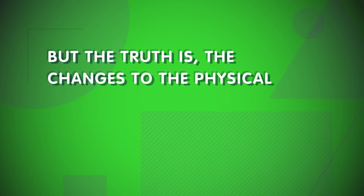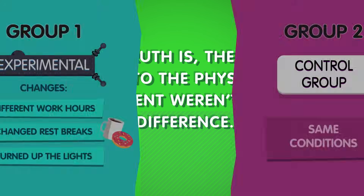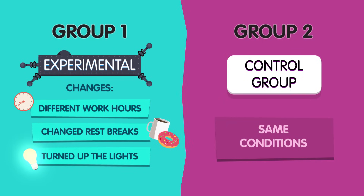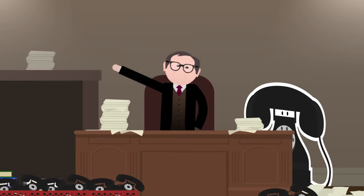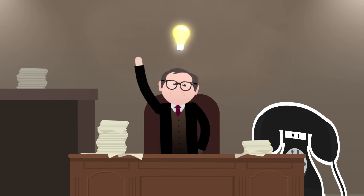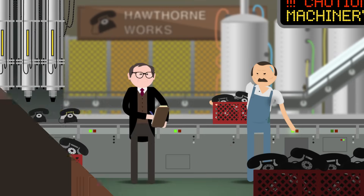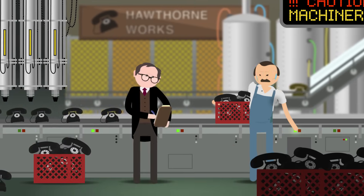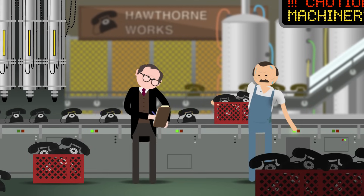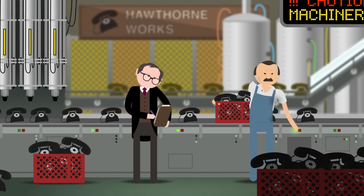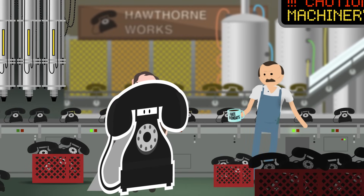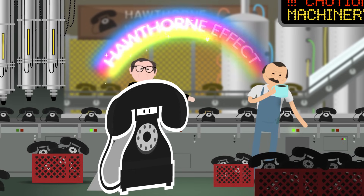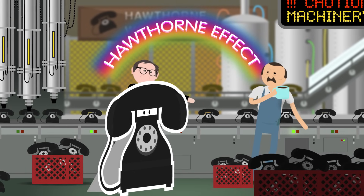But the truth is, the changes to the physical environment weren't what made the difference. Yes, brightening the room made workers more productive — but so did dimming the lights, and so did reversing all of the other changes that Mayo made. Eventually, Mayo realized that the workers were working harder because he was observing them. The fact that the workers knew someone was watching how hard they worked made them want to work harder. And this finding led future researchers to be much more aware of how their own presence influenced their findings. To this day, the influence of an observer on the behavior of her participants is known as the Hawthorne Effect.